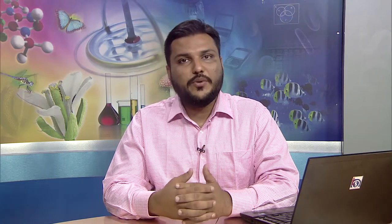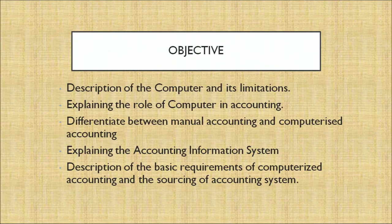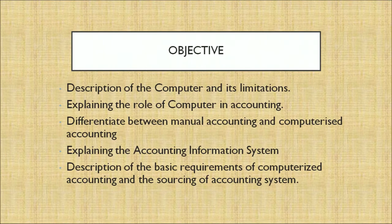Let's discuss the objectives of computer and computerized accounting systems. Number one: description of the computer and its limitations. Second: explaining the role of the computer in accounting. Third: differentiating between manual accounting and computerized accounting. Fourth: explaining the accounting information system. Fifth: description of the basic requirements of computerized accounting and the sourcing of accounting systems.